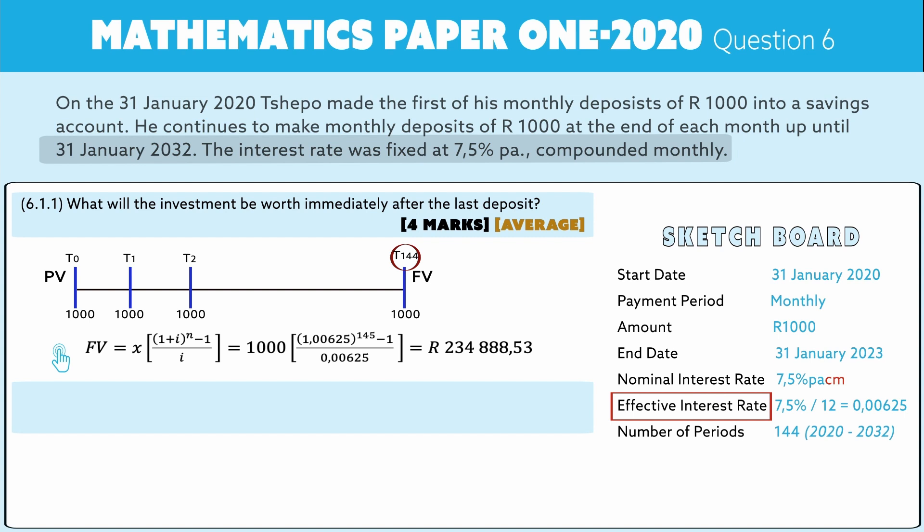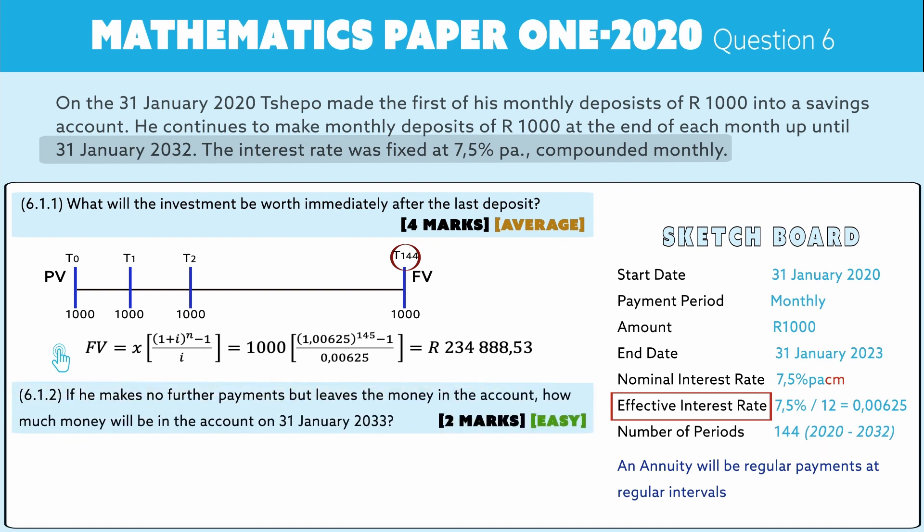That was question 6.1.1 — pretty straightforward, you just had to recognise you're working with an annuity. A reminder: an annuity involves regular payments at regular intervals. The moment you interrupt that rhythm, the annuity stops and becomes something new. Now for 6.1.2: if he makes no further payments but leaves the money in the account, how much will he have one year later?